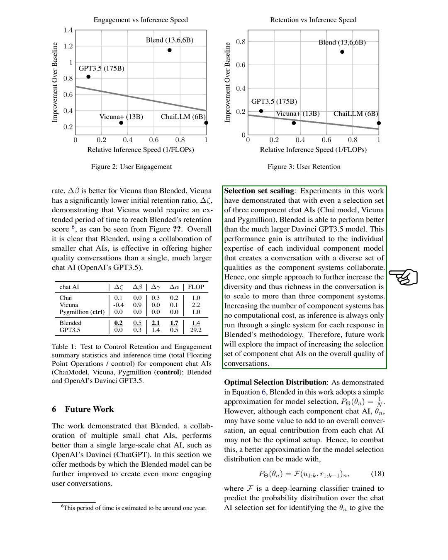Therefore, a straightforward way to increase the diversity and richness of the conversation is to include more than three component systems. Adding more component systems doesn't increase the computational cost, as Blended's methodology only requires running inference through a single system for each response. Future research will investigate the effect of expanding the selection set of component chat AIs on the overall quality of conversations.